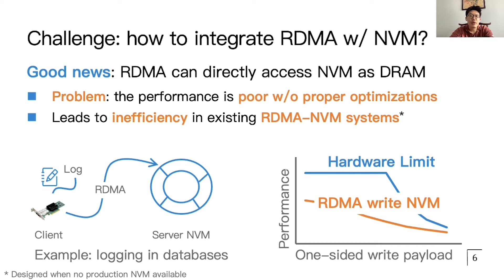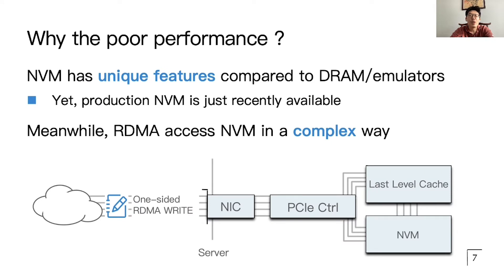However, our initial experiment revealed that RDMA suffers from bad performance when simply treating NVM as DRAM. Why does RDMA have poor performance when accessing NVM as DRAM? First, although NVM provides the same interfaces as DRAM, it has different performance characteristics. What's worse, existing emulators cannot faithfully emulate most of the performance features of NVM.